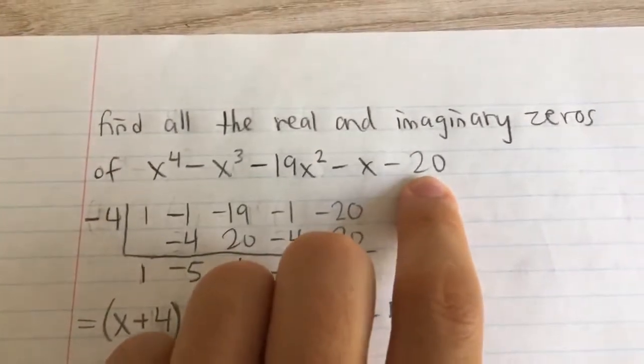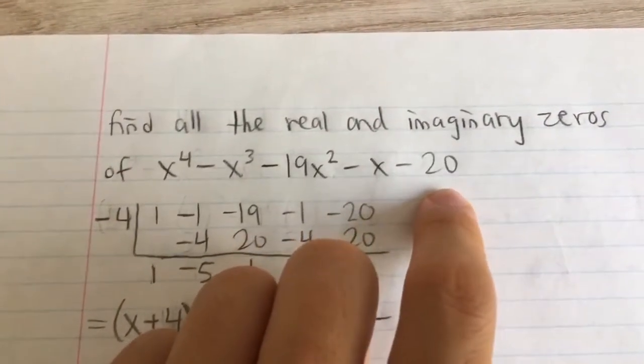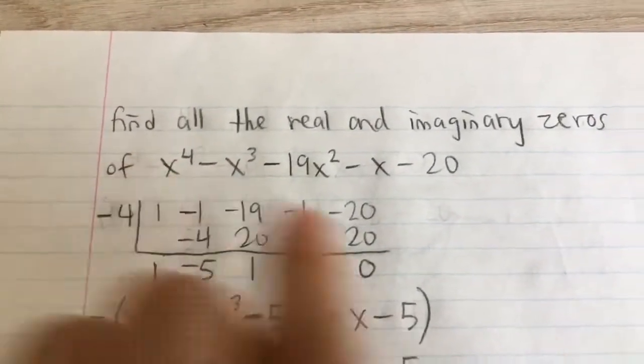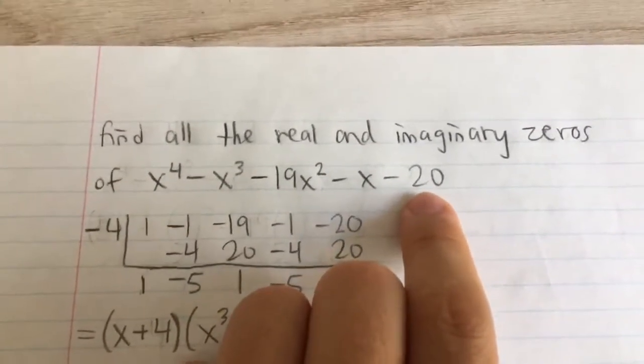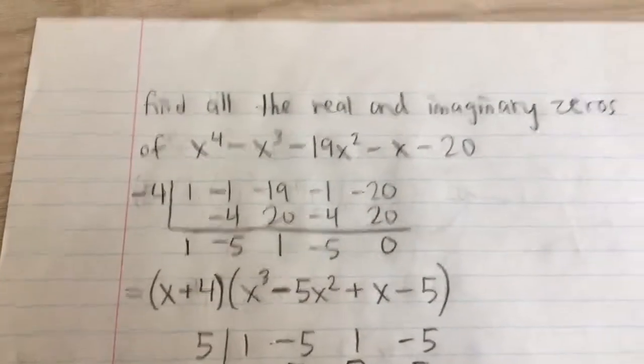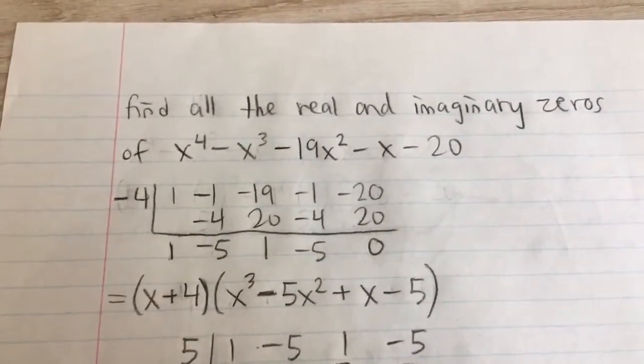And possible values are any factors of 20, divided by the leading coefficient, but just one. So we can just say it's any factors of 20. So 1, negative 1, 2, negative 2, 4, negative 4, etc.